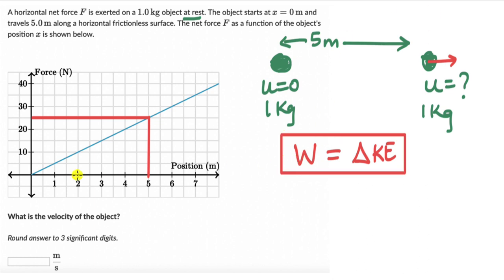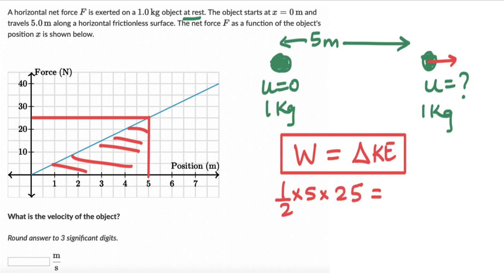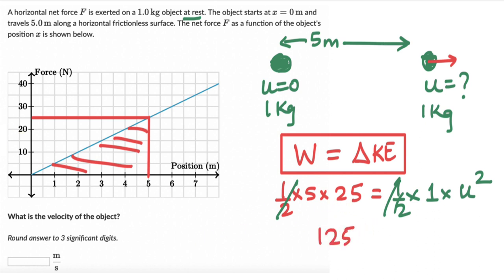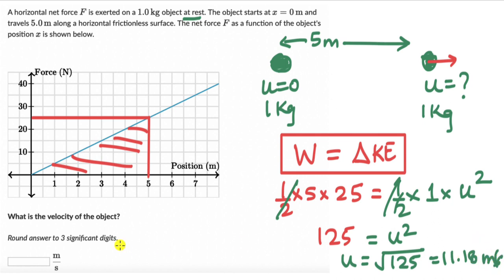We calculate the area of the triangle: half × base × height = half × 5 × 25. That equals the change in kinetic energy: final is half × 1 × u², initial is 0. So 5 × 25 = 125 = u². Therefore u = √125, which works out to 11.18 meters per second. Rounding to three significant digits, the velocity is 11.2 meters per second.